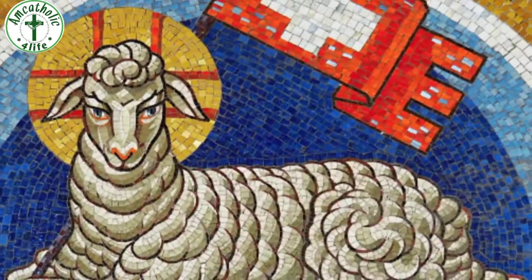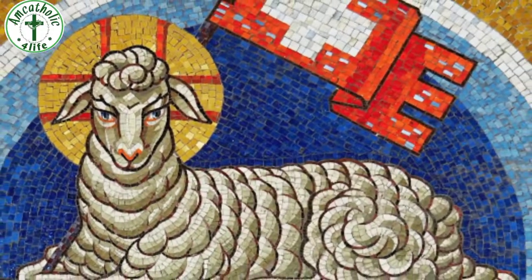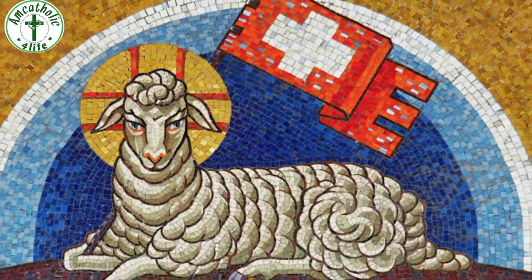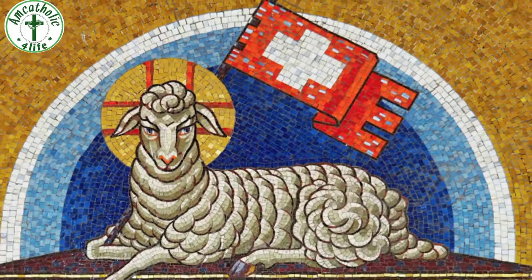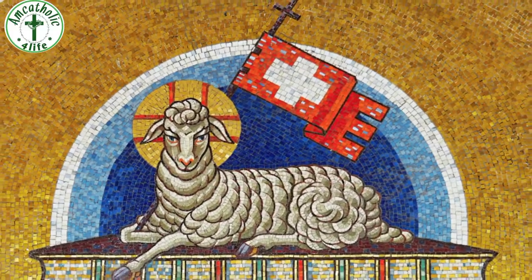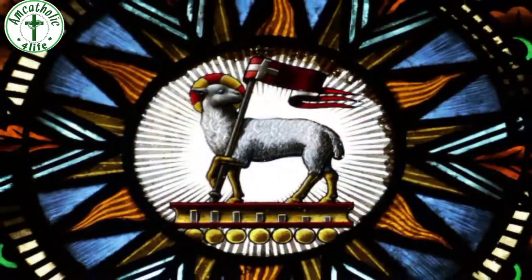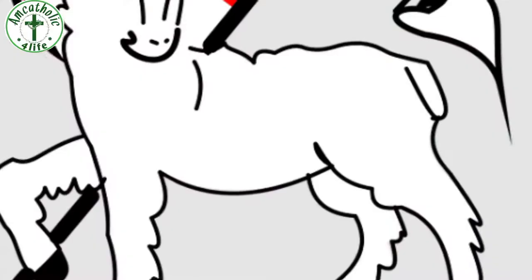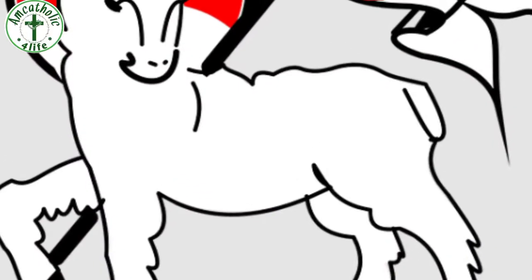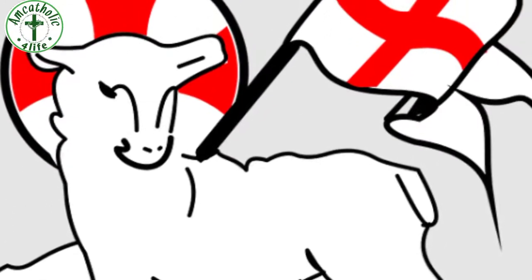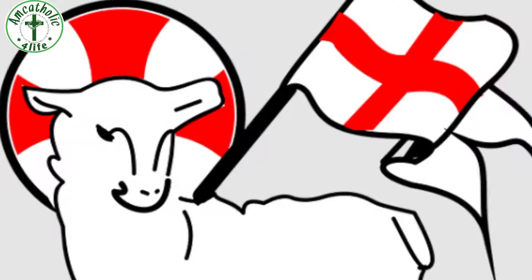The lamb is an excellent metaphor for Christ because it is pure and innocent, and in the Old Testament it is used as a sacrifice for God — just as Jesus Christ sacrificed himself for our sins. The statement 'the Lamb of God' has its origin in the book of John, when John the Baptist addressed Jesus as the Lamb of God. The lamb is often seen with a banner and cloth, which reminds us of the glad sacrifice of the lamb.